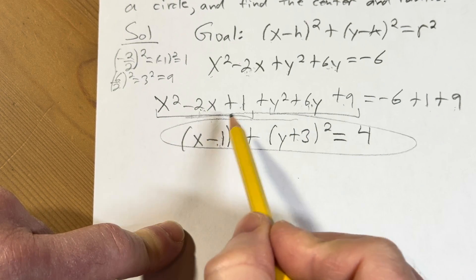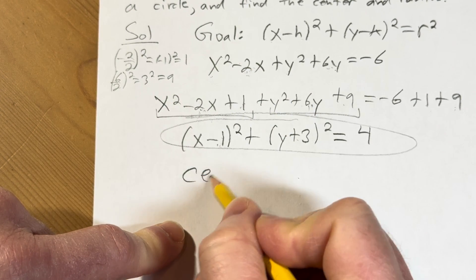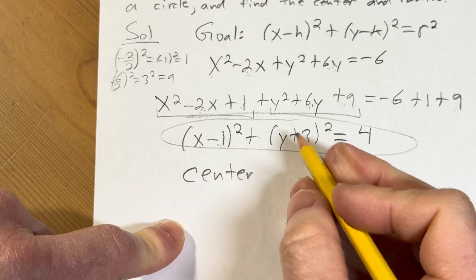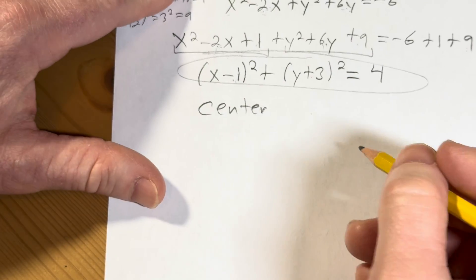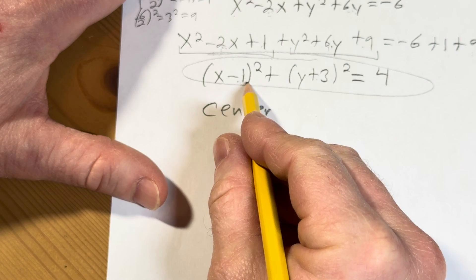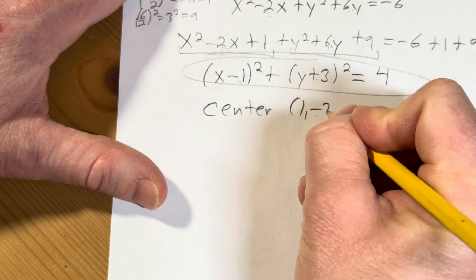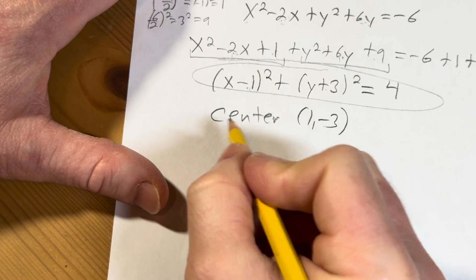And then now the center here, the center is h, k. Okay, so it's going to be, so the center you switch the signs.